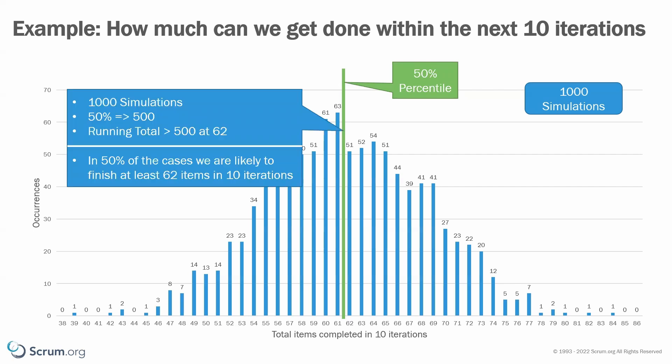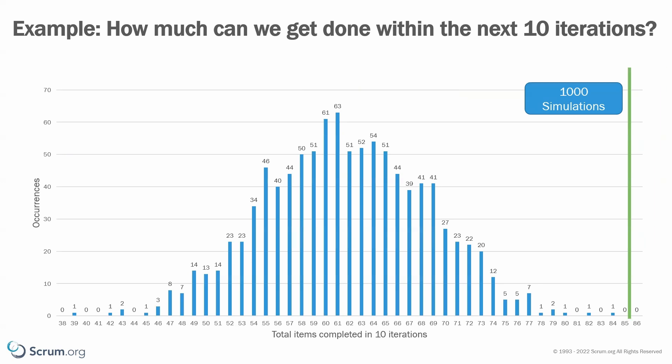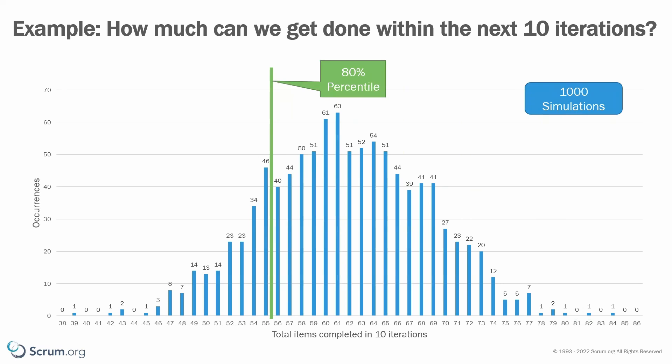If you want a higher confidence, then obviously the number of items has to be lower, because there is a higher chance that we can complete lower numbers of items. So let's rerun this with a probability of 80%. 80% of our 1,000 simulations is 800, so we run from right to left until we reach an accumulation of 800, and then we will see that we might complete 56 items or more with a probability of 80%.